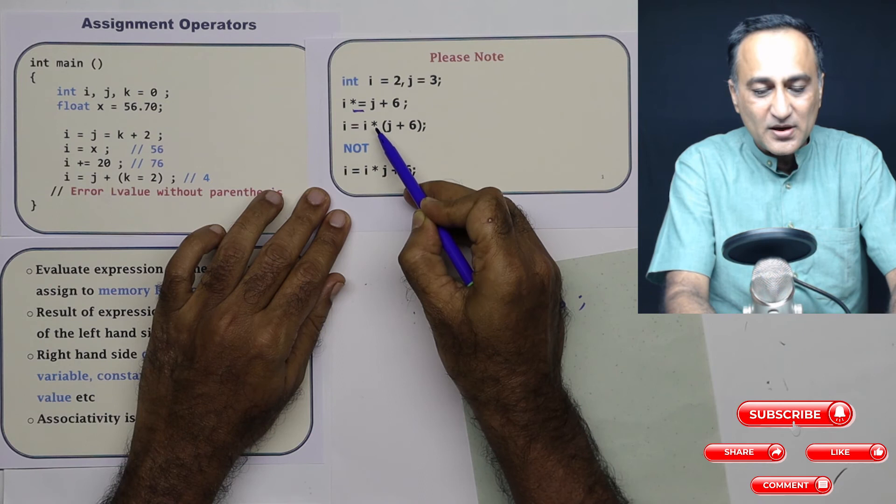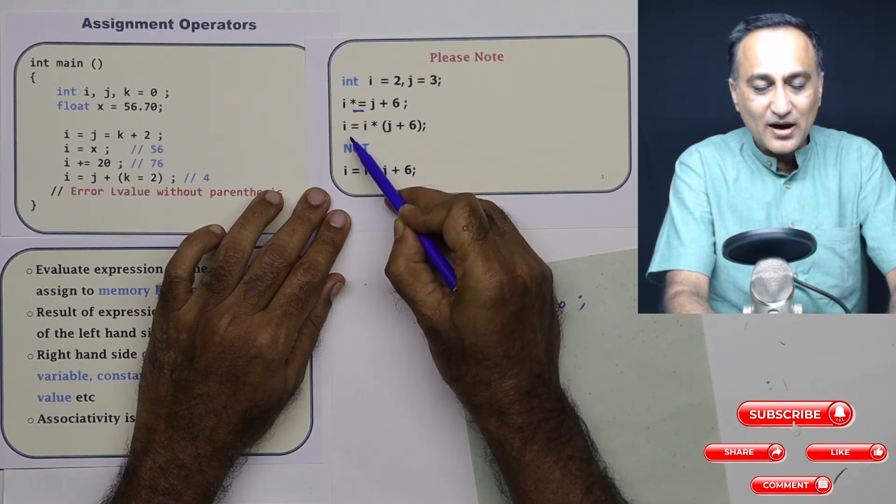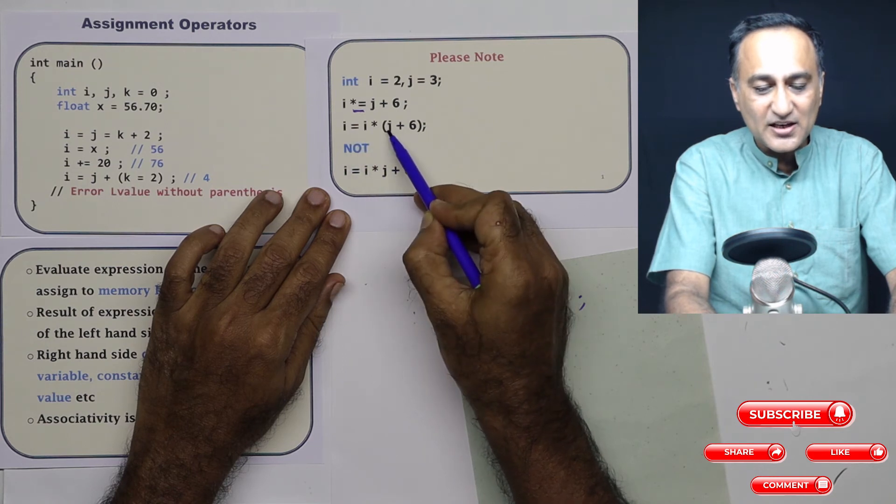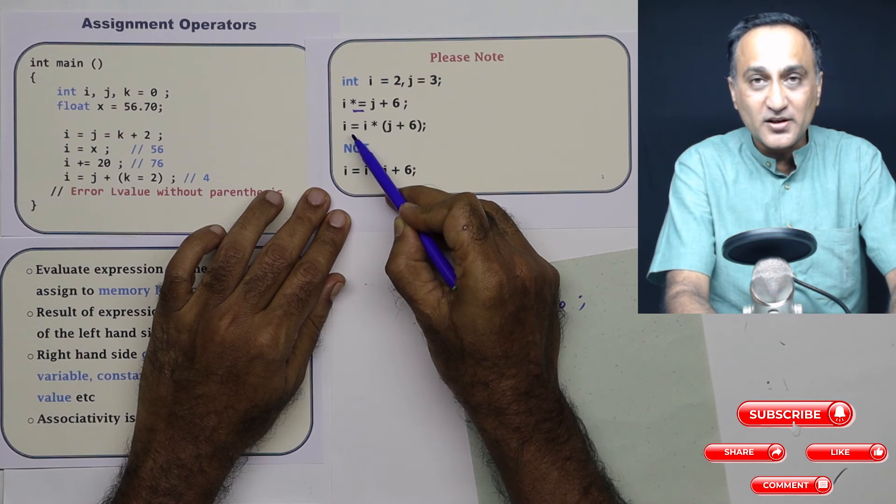And then it is going to be 9 into value of i which is 2, it is going to be 18. So the new value of i is, sorry, 9 into 2 is 18. So i is going to be now equal to 36.